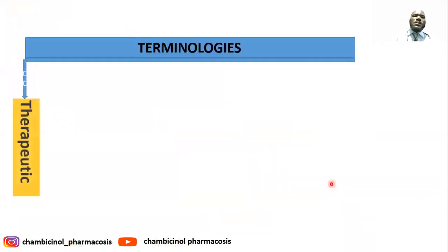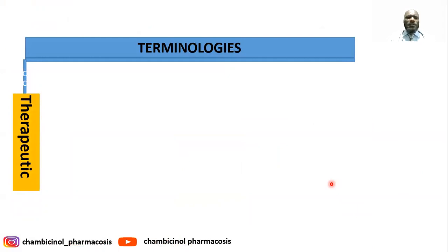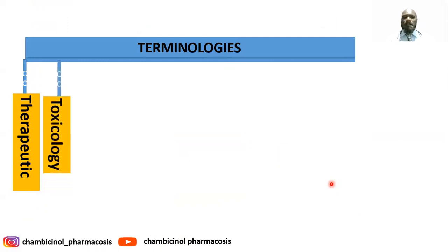Another terminology is therapeutics — the treatment of disease with the action of remedial agents. We also have toxicology, which is the study dealing with the effects, nature, and detection of poisons.